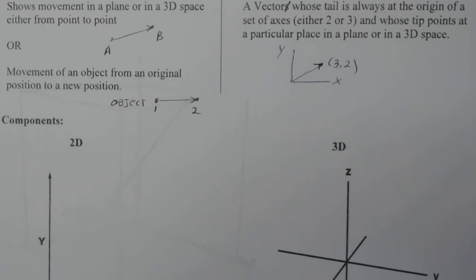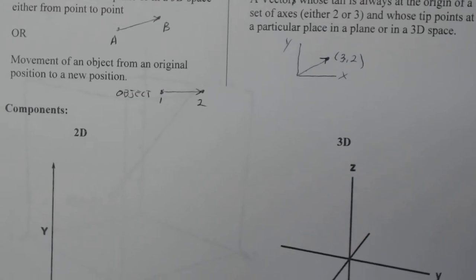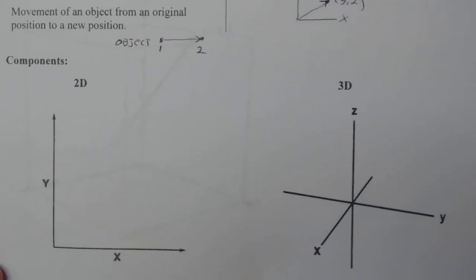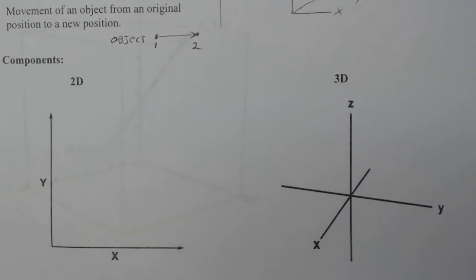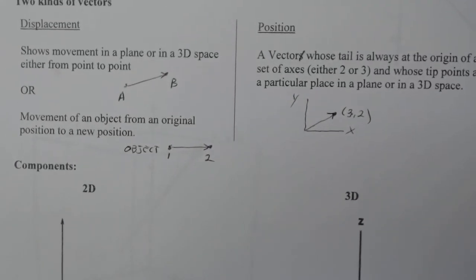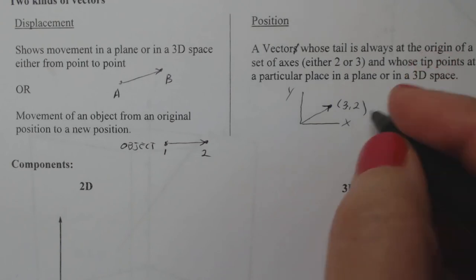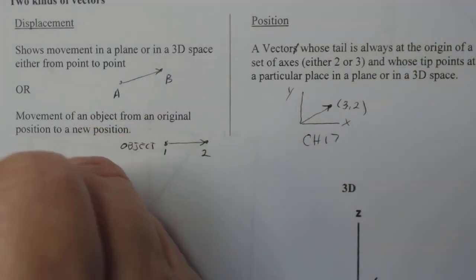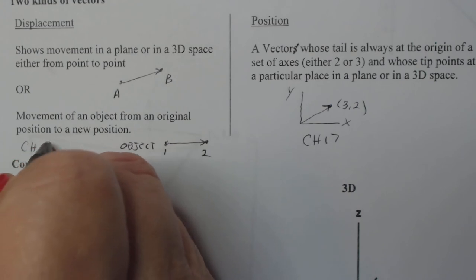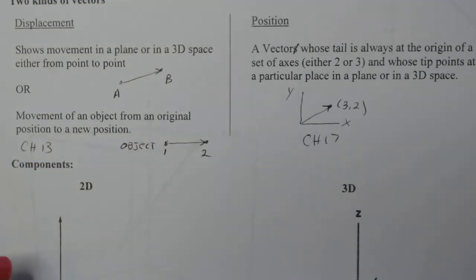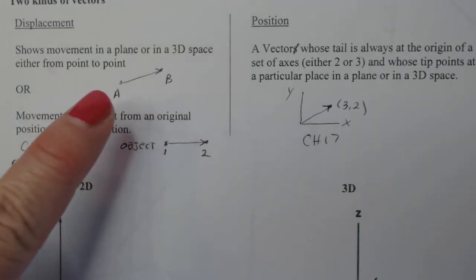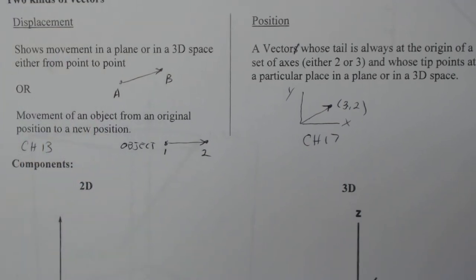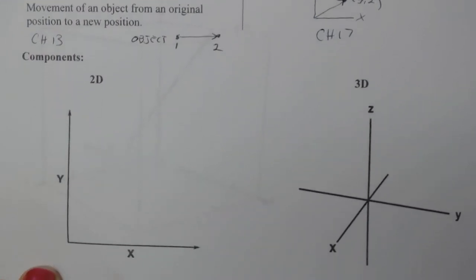All right, let's talk about components. Now this is something again that you'll use in physics. You'll use it in this class, especially in chapter 17. By the way, up here, we're going to talk about position vectors more specifically in chapter 17. And then displacement is mostly chapter 13 where we're working right now. So there's two kinds of vectors you can think of. This is the one we're working with now.